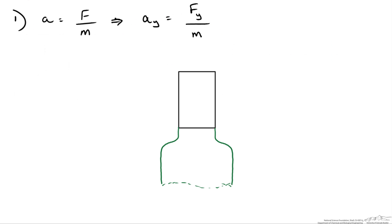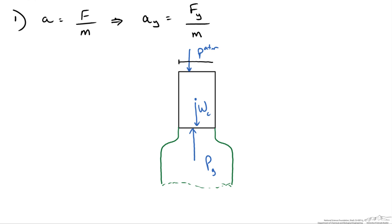We have our cider bottle. We know we have a pressure force acting on the top surface of the cork due to atmospheric pressure, and a pressure force acting on the bottom surface of the cork due to the pressure within the bottle. We also have the weight of the cork acting downwards. Those are our three main forces. The diameter is 1 inch and the height of the cork is 2 inches.